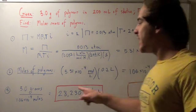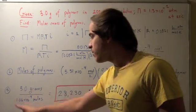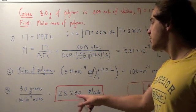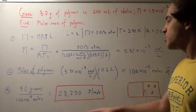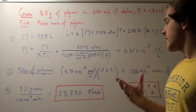And now we take our grams of polymer, divide it by our moles of polymer, and we get 28,230 grams per mole, or 28 kilograms per mole. And that's our final answer.